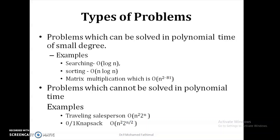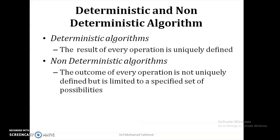The other category is problems which cannot be solved in polynomial time. For example, the traveling salesman problem or the 0/1 knapsack problem have complexity given in terms of 2^n, n^2·2^n, etc. So the second category is non-polynomial time algorithms and the first category is polynomial time algorithms.